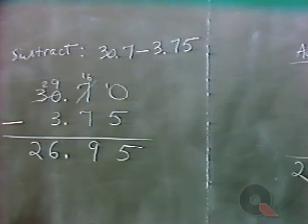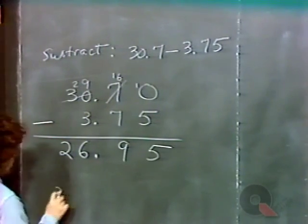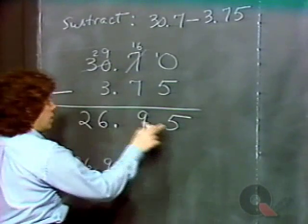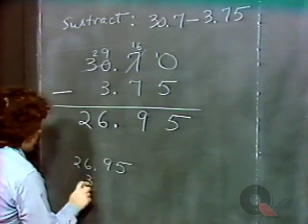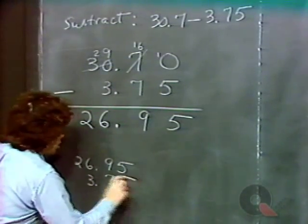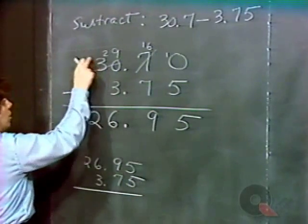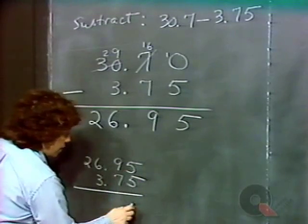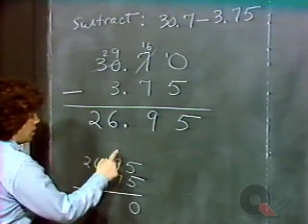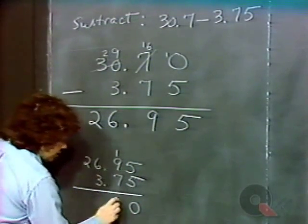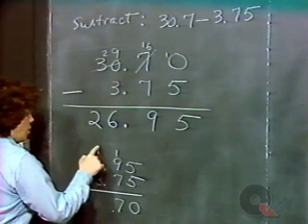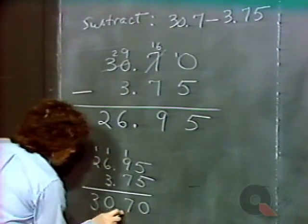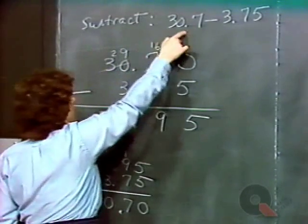You can check this by adding your answer to what you subtracted: 26.95 plus 3.75. Five and 5 is 10; 1 plus 9 is 10, carry to get 17; 7 and 3 is 10, carry; 3 gives 30.7 — which is what we started with, so the answer checks out.